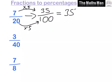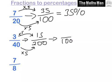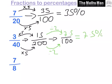For 3 over 40, we can't get to 100 straight away, so we get to 200 first. From 40 to 200 we multiply by 5, so 3 times 5 gives us 15. Then to get from 200 to 100 we divide by 2, so 15 divided by 2 is 7.5. That equals 7.5%.